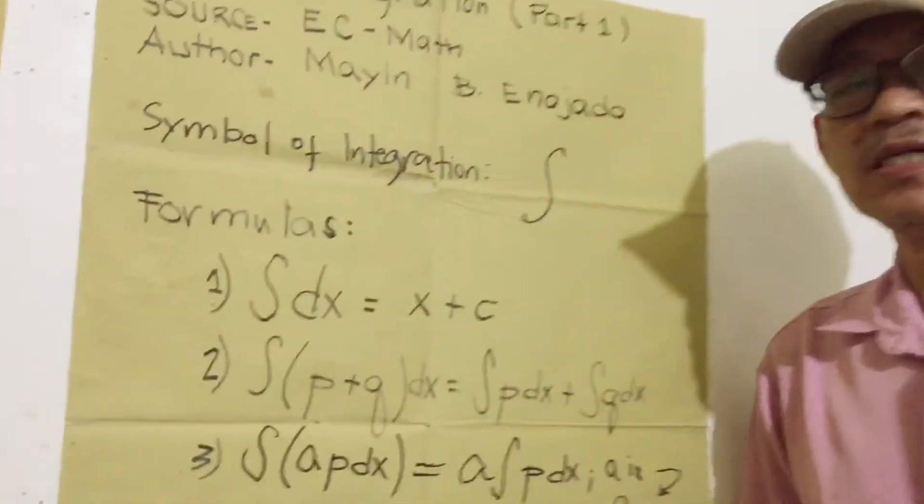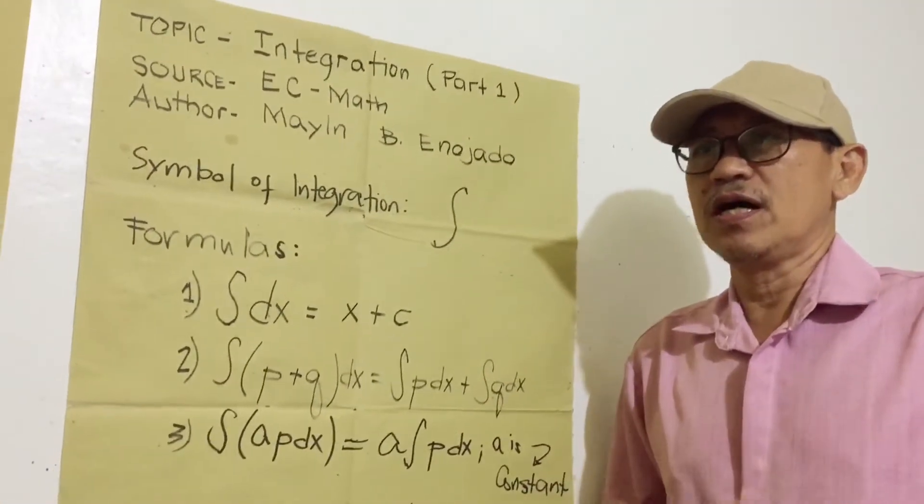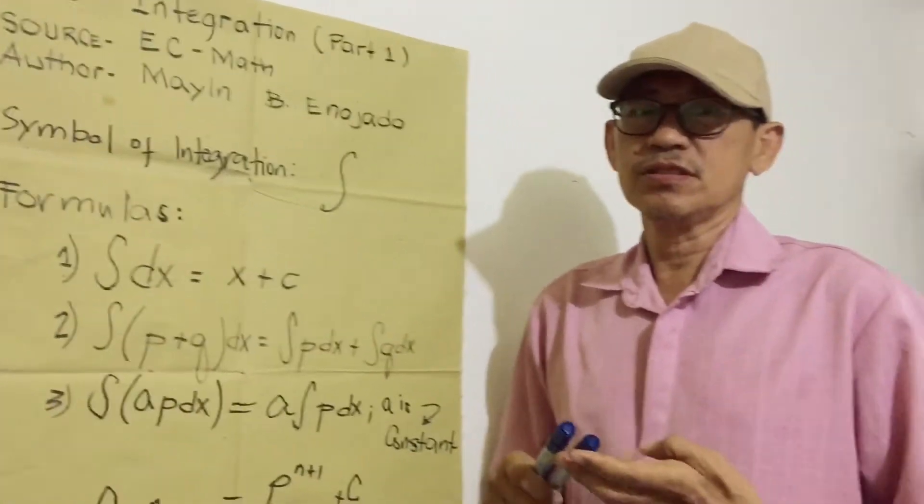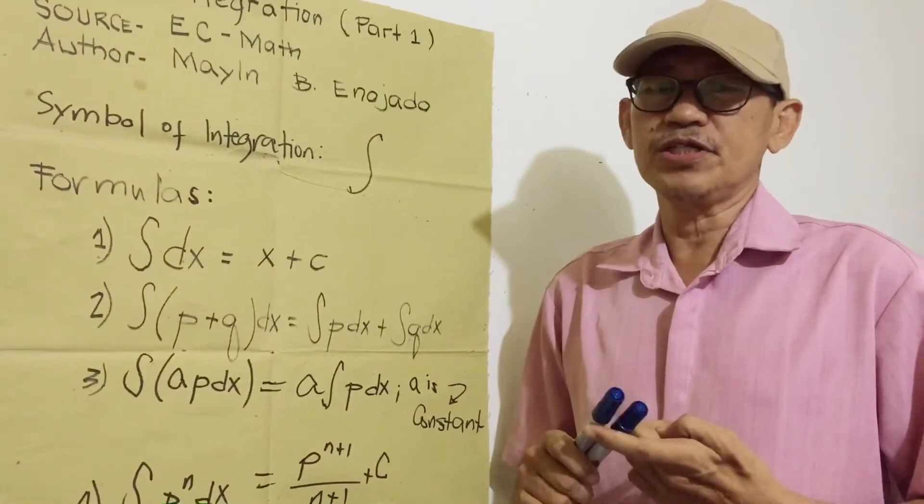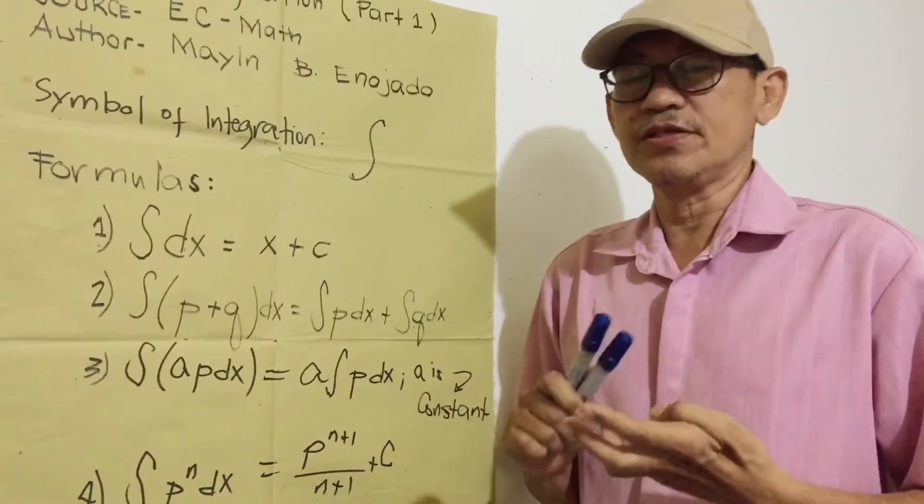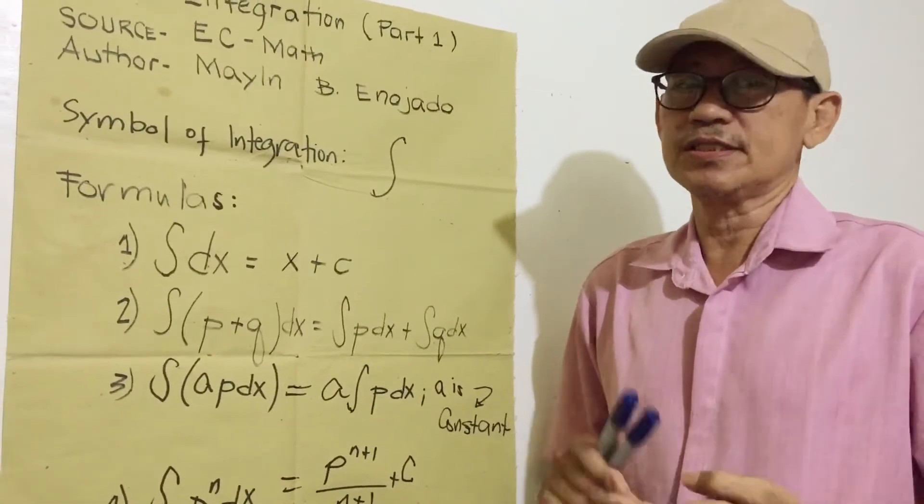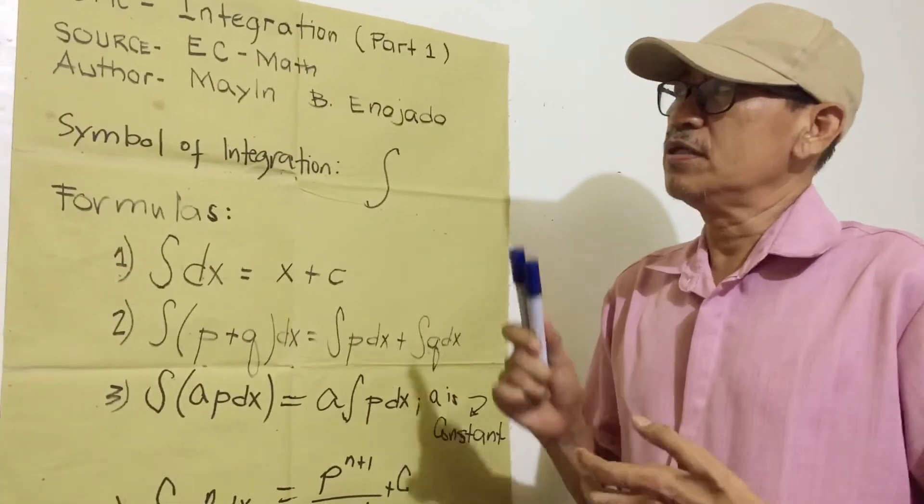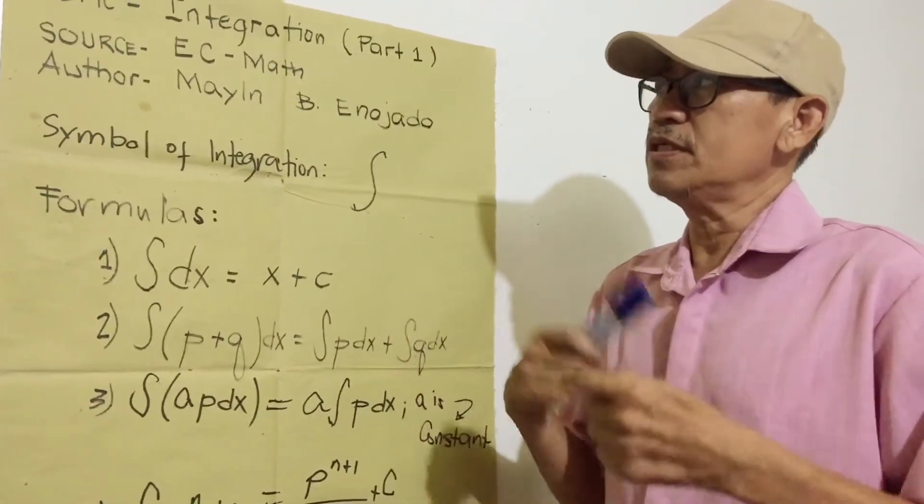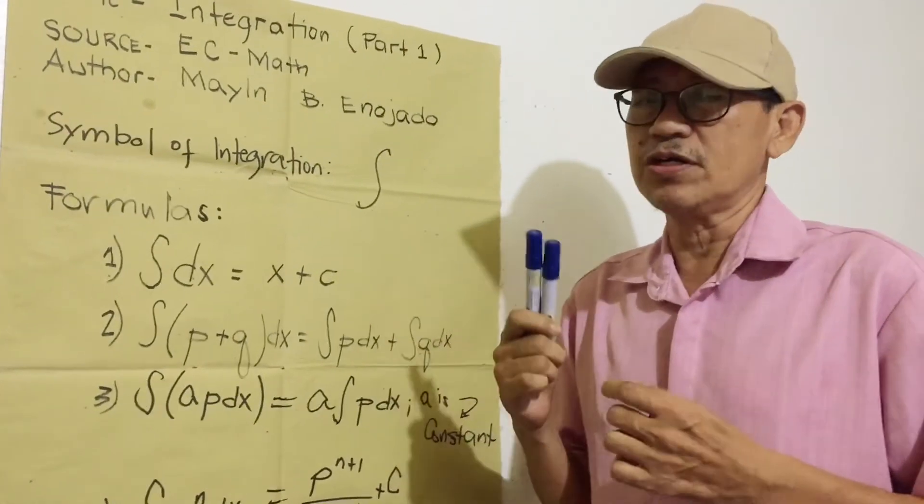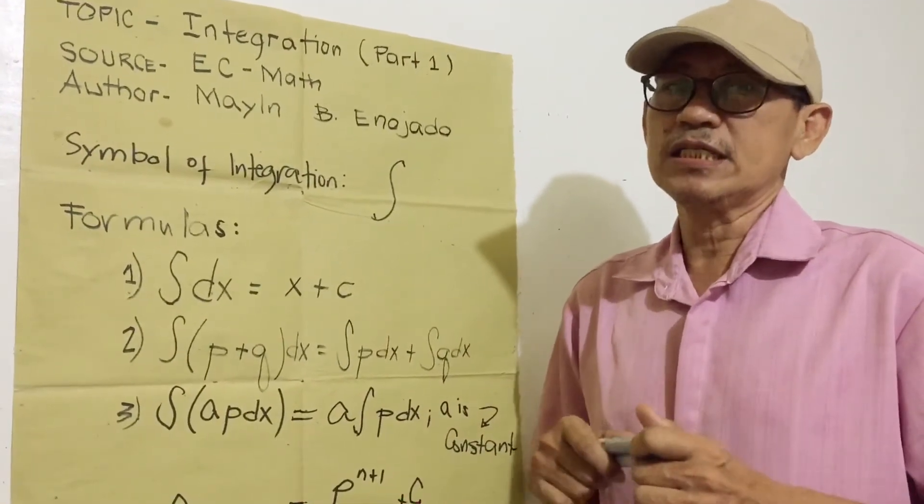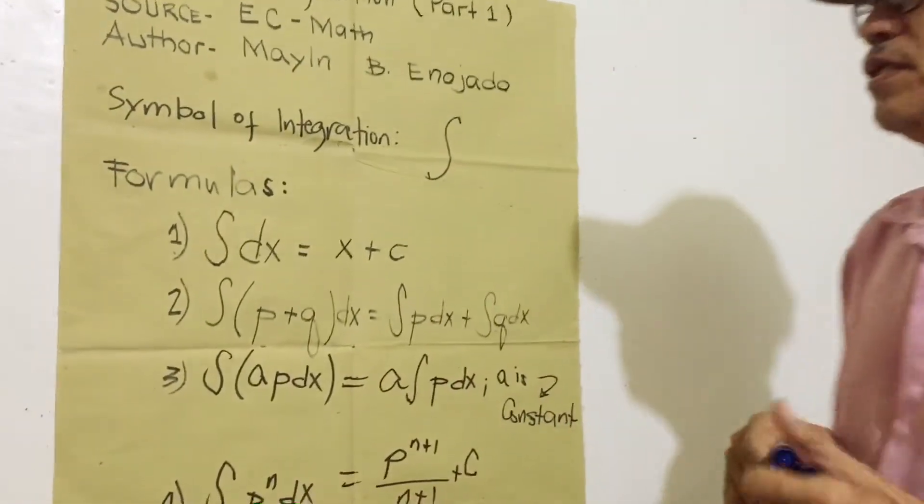Integration is also called anti-derivatives and anti-differentiation. In arithmetic, we have addition, subtraction, multiplication, and division. The inverse of addition is subtraction and the inverse of multiplication is division. So integration is addition and derivatives is subtraction.